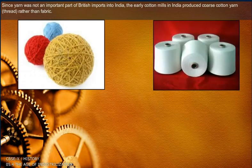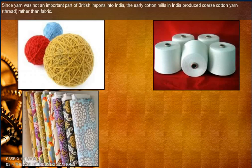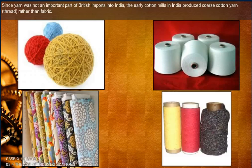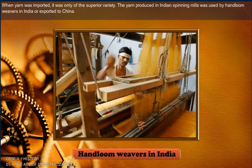Since yarn was not an important part of British imports into India, the early cotton mills in India produced coarse cotton yarn thread rather than fabric. When yarn was imported, it was only of the superior variety. The yarn produced in Indian spinning mills was used by handloom weavers in India or exported to China.